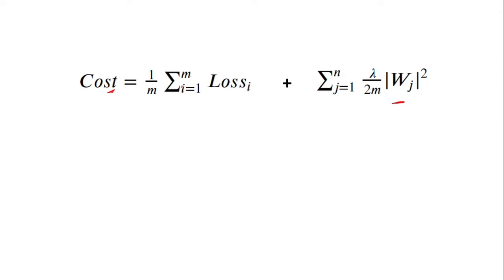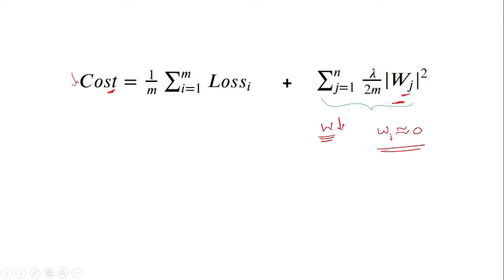Because we want to minimize the cost function, if we add the square of our w parameters to the cost function, it will force our model to reduce the values of the w's as well, and the sum of our w parameters will be close to zero, creating that nullifying effect. This term — the sum of wj squared — represents the sum of squares of all the parameters. So if we had theta 0 to theta 500 parameters, this will be equal to the sum of squares of all those parameters, giving us a single positive value.